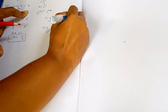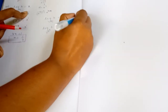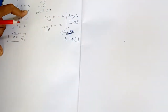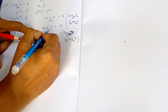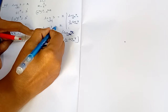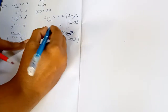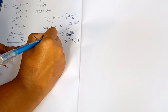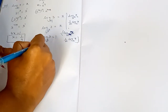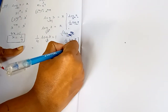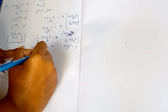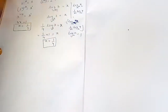Applying the property: log x to the base a^m equals (1/m) log x to the base a. Here m equals 4, so we write (1/4) into log 3 to the base 3. Since log a to the same base always equals 1, this gives (1/4) into 1, therefore x equals 1 by 4.